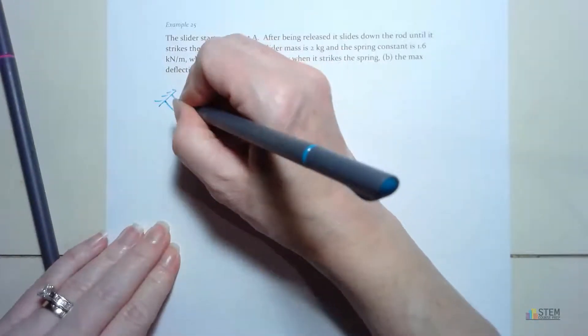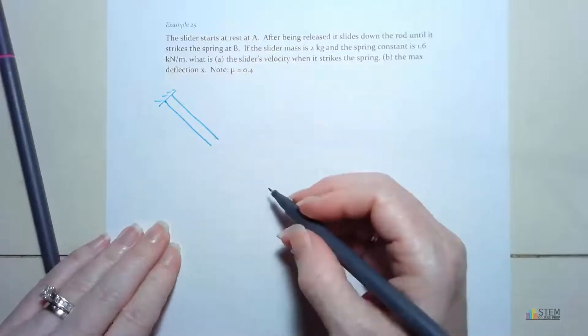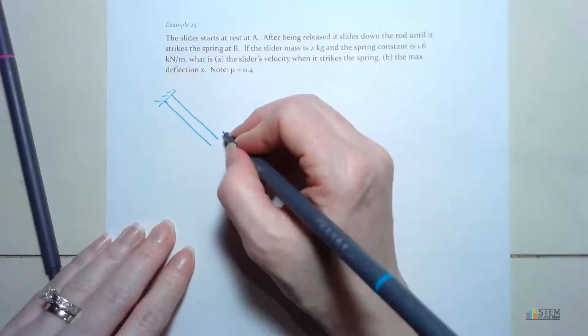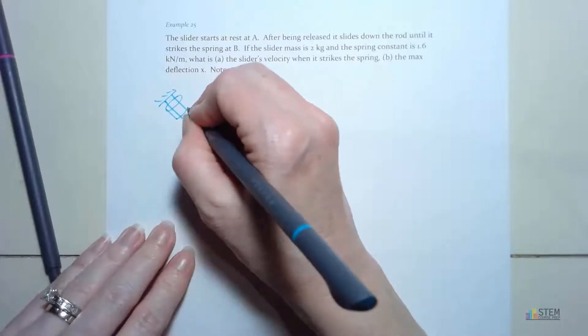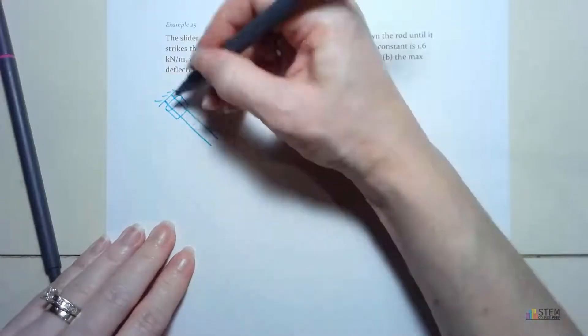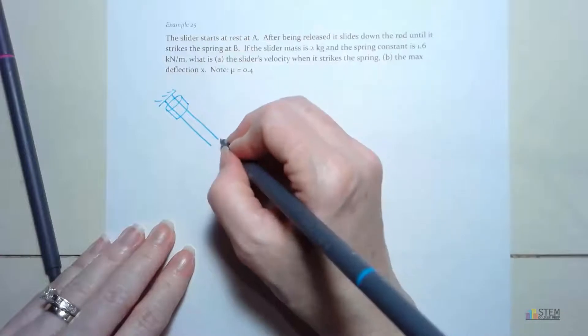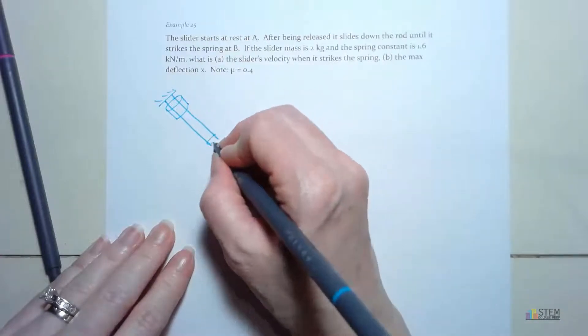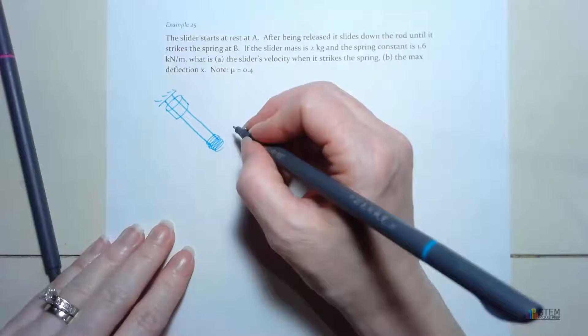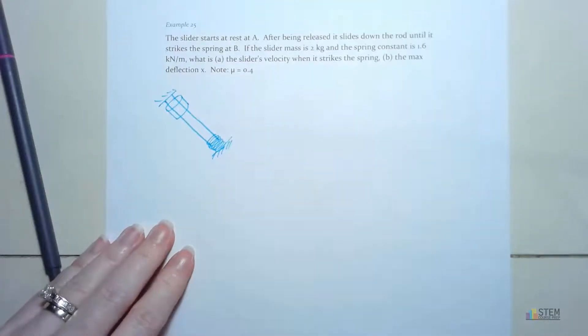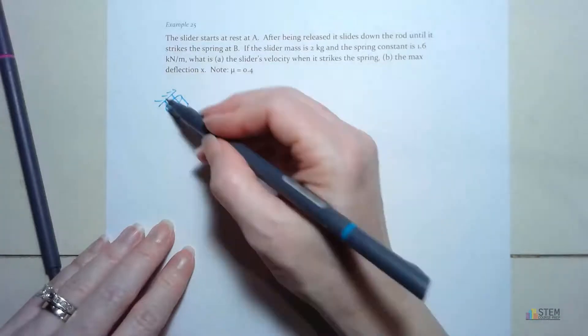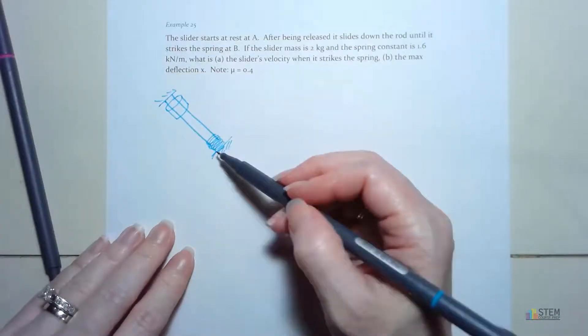So let's go ahead and draw this picture out first and then we'll go over it. We're going to have this rod that looks like that, and we're going to have a slider on here. So here's our slider right there. This thing can slide up and down on this rod. Now at the bottom of this rod there's going to be a spring, so there's our spring, and then there's the base. It's fixed here and here. And we've got this spring.